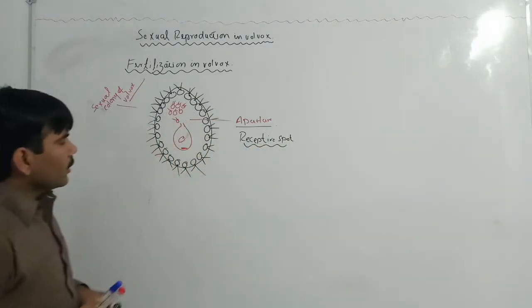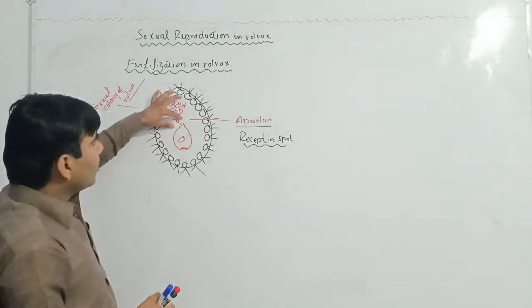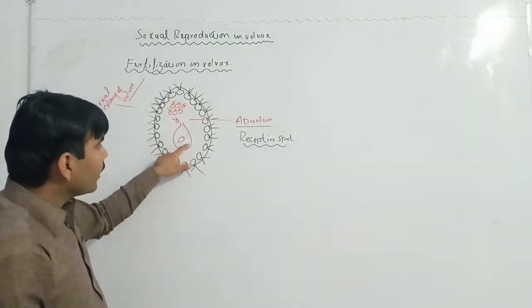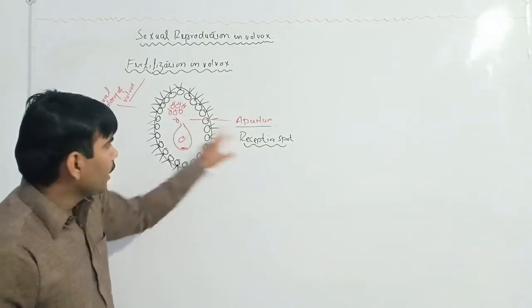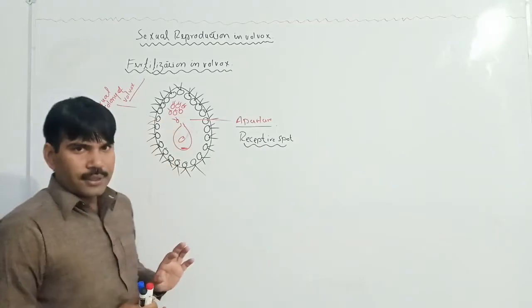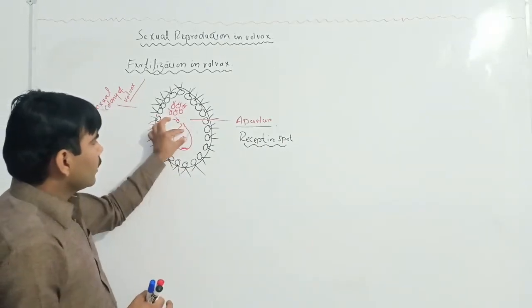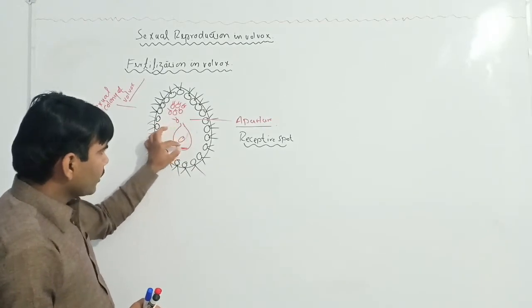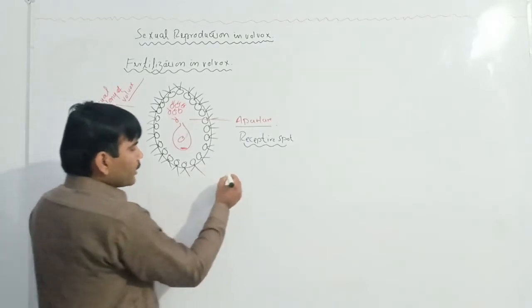When the receptive spot opens, only a single antherozyte can enter into the oogonium and fertilize it. The oogonium is the female structure, and when it is fertilized, it is known as a zygote.